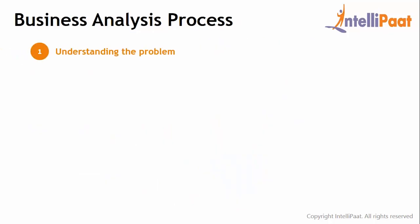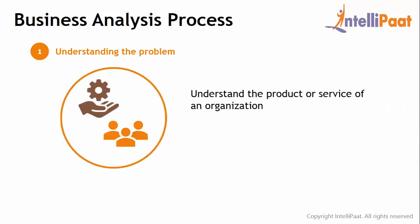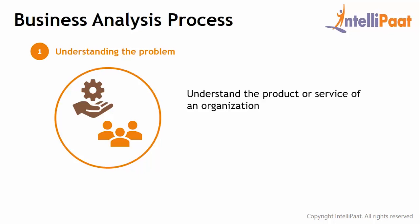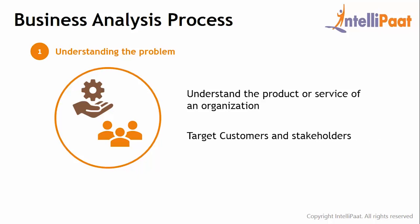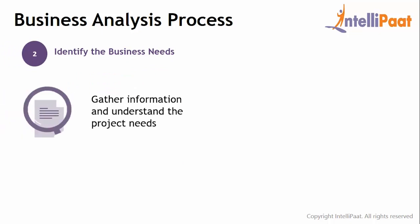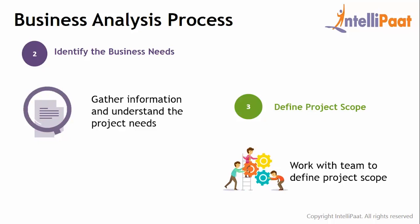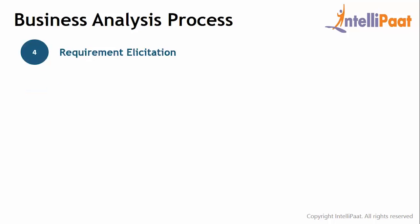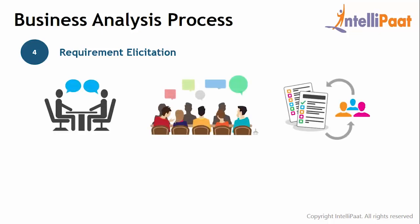Step 1 is about understanding the problem. The business analyst needs to understand the product or service provided by the organization and define the target customers and stakeholders. Step 2 is identifying the business needs — the business analyst gathers information from stakeholders and understands the need of the project. Step 3 is defining the project scope, where the BA talks with the project manager and project team. Step 4 is requirement elicitation, the core task of the role. Various techniques are available such as one-on-one interviews, focus groups, questionnaires, and many more.